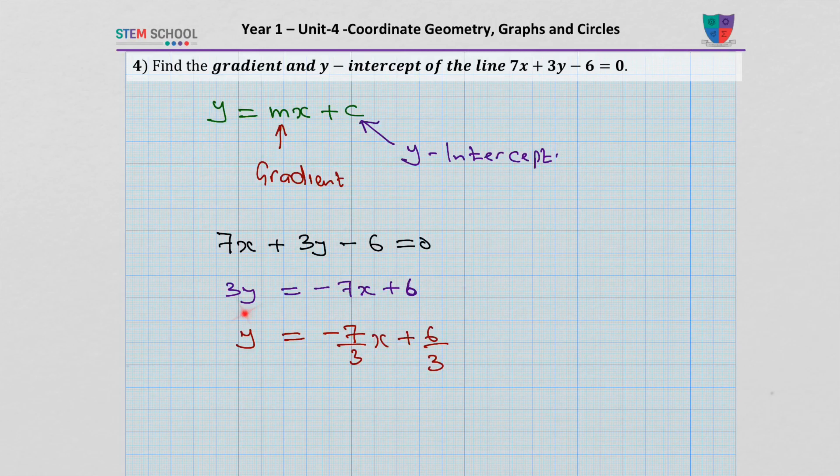I'll now divide both sides by 3 and that becomes minus 7 over 3x plus 6 over 3. And then I get minus 7 over 3x plus 2. My m is minus 7 over 3 and my c is plus 2.